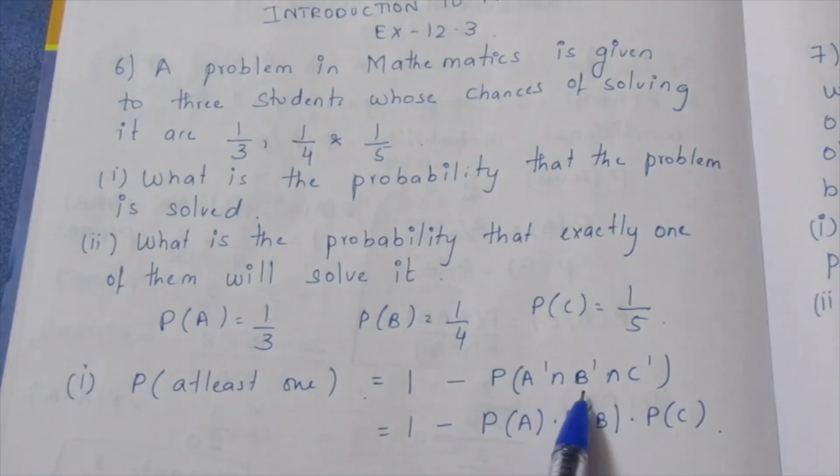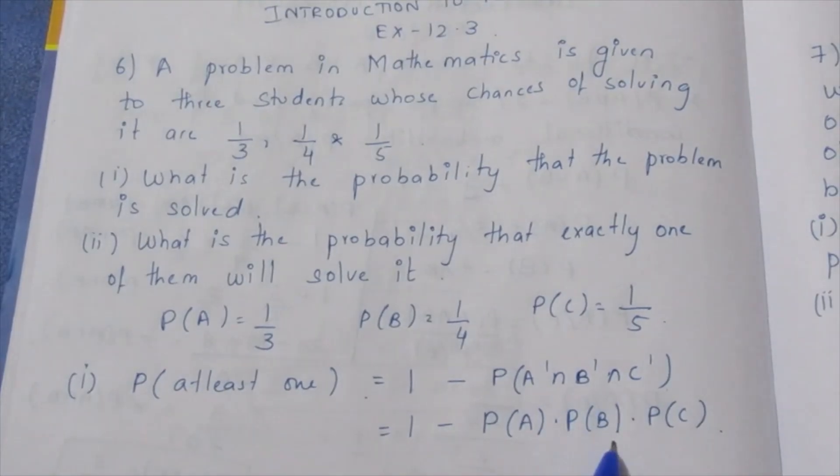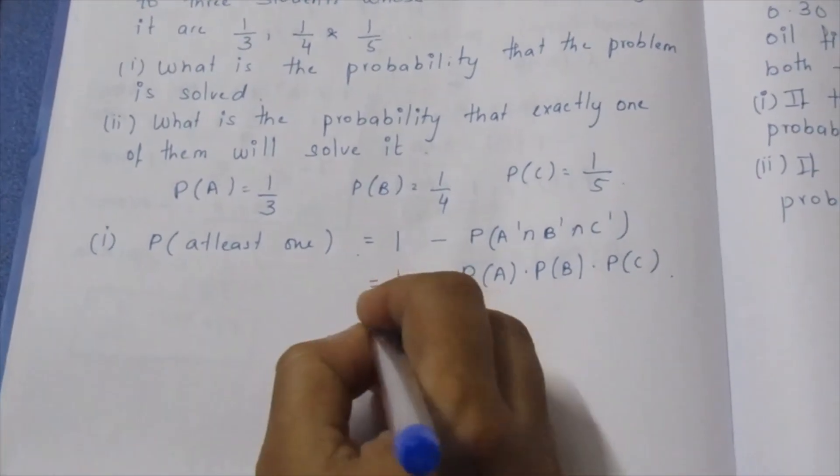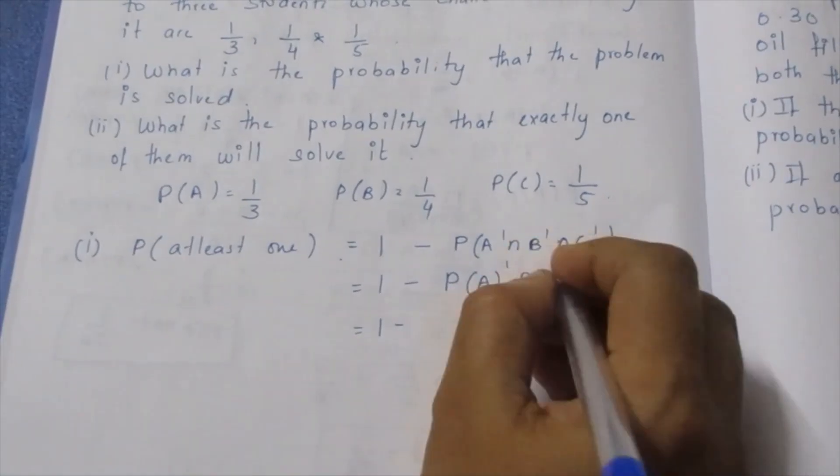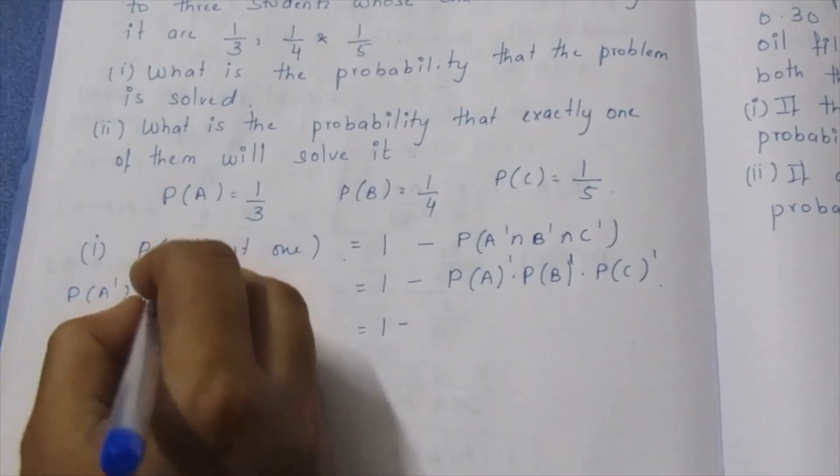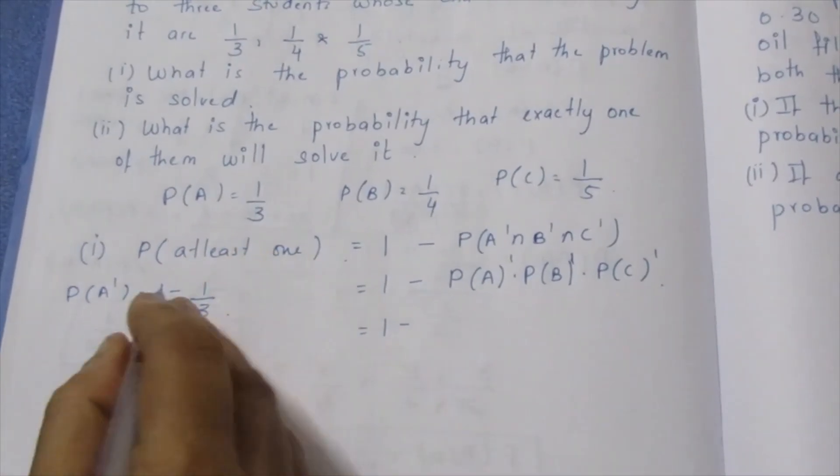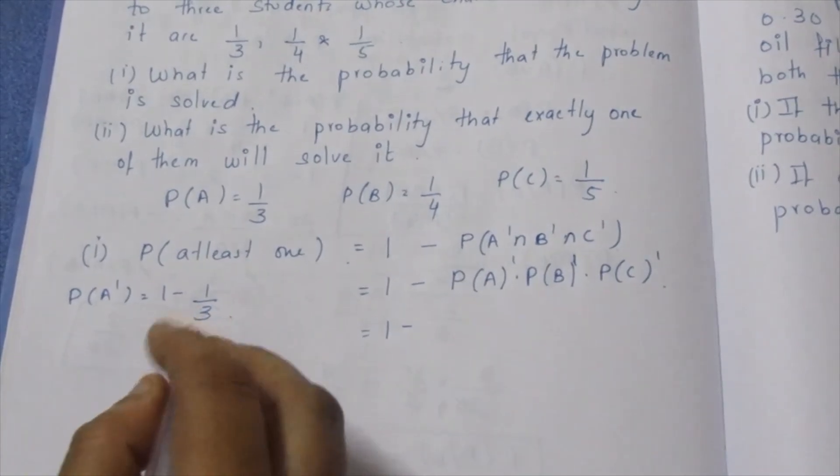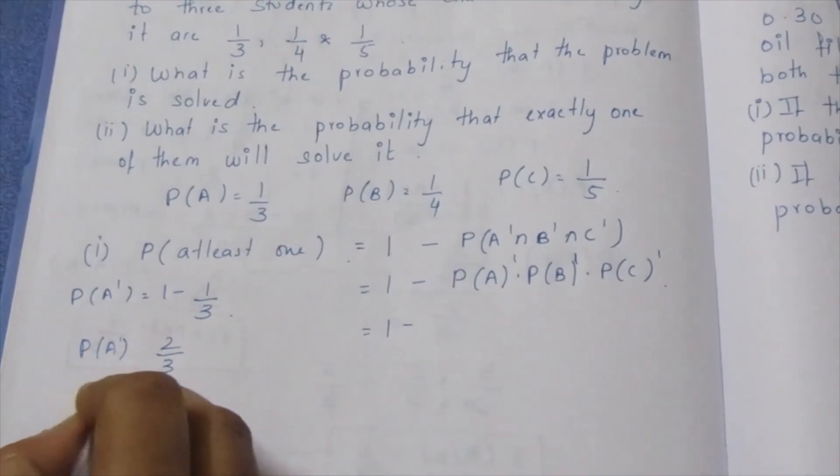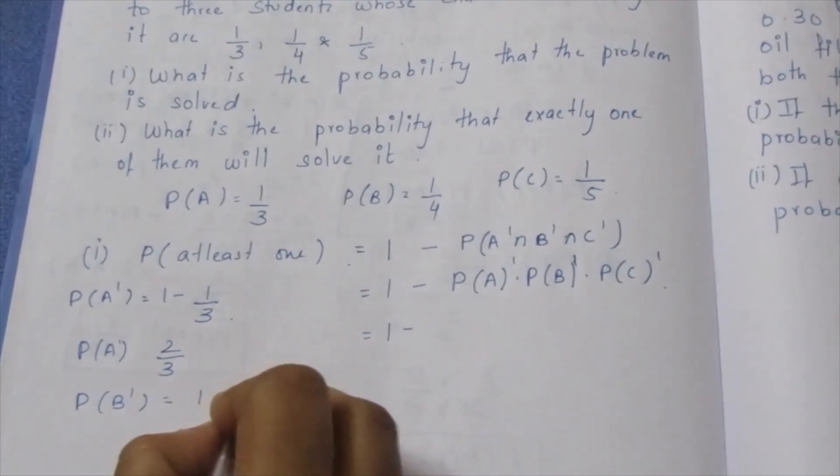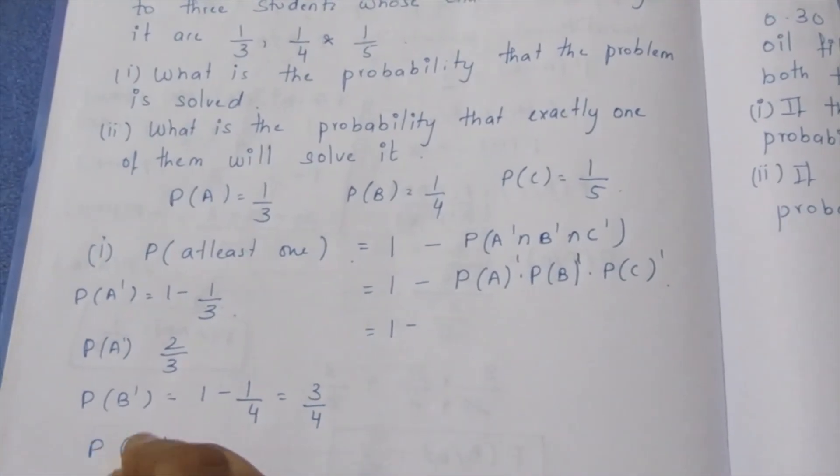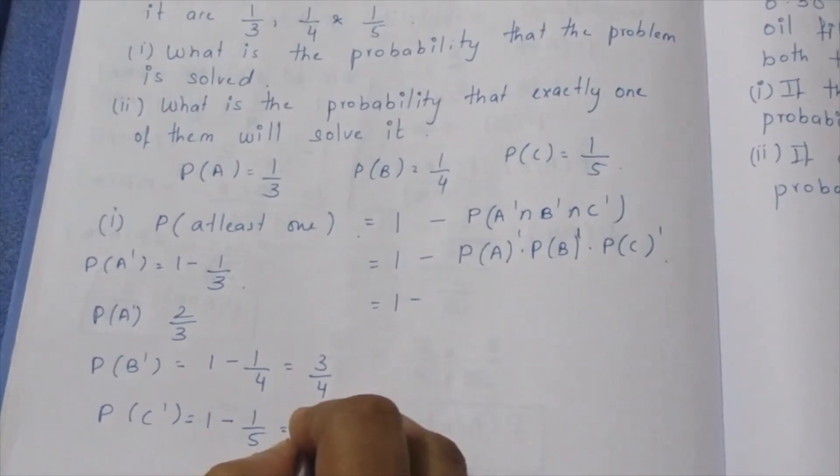P of A intersection P of B for independent events is P of A into P of B. Three events are in the same way. 1 minus this is dash P of A prime into P of B prime into P of C prime. 1 minus P of A is 1 plus 3 minus 1 is 2 by 3. P of B prime is equal to 1 minus 1 by 4, 3 by 4. P of C prime is equal to 1 minus 1 by 5, 4 by 5.